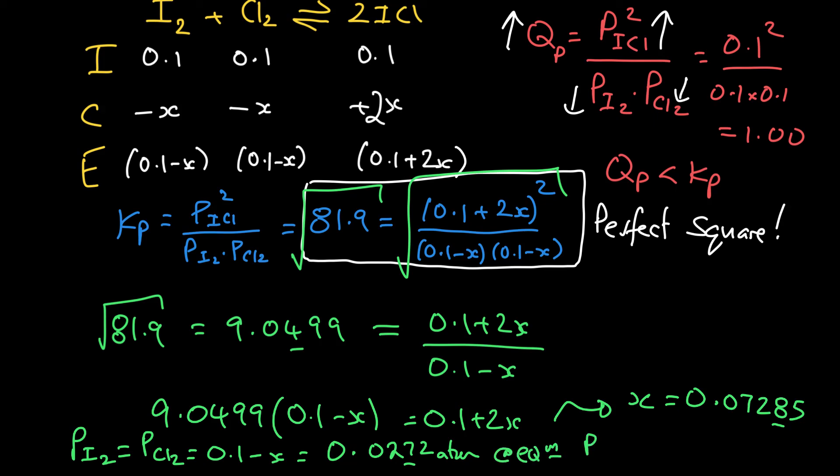And the partial pressure of ICl, that was 0.1 plus 2X. Again, if I plug in those values, I get something like 0.2457. And again, to three decimal places, 0.246. And those are pressures, so atmospheres. So at equilibrium, that's what we got. So that was much easier than using the quadratic equation. So we should thank our lucky stars.